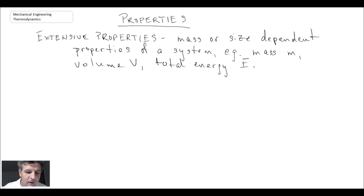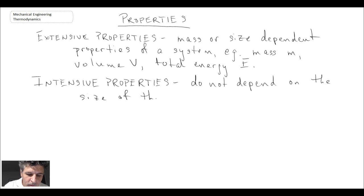But before we get to that, we also have intensive properties. And these are properties that do not depend upon the size of the system. Examples of these could be temperature or pressure. So temperature, we will use the nomenclature capital T for temperature, and capital P for pressure.